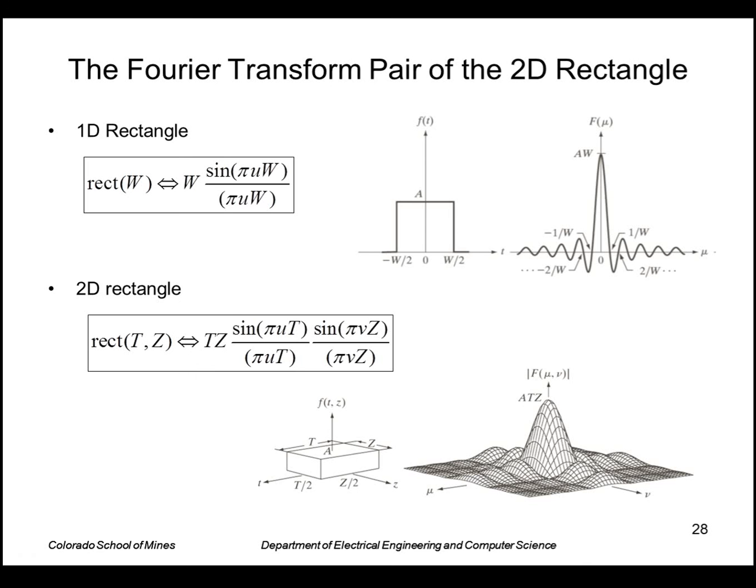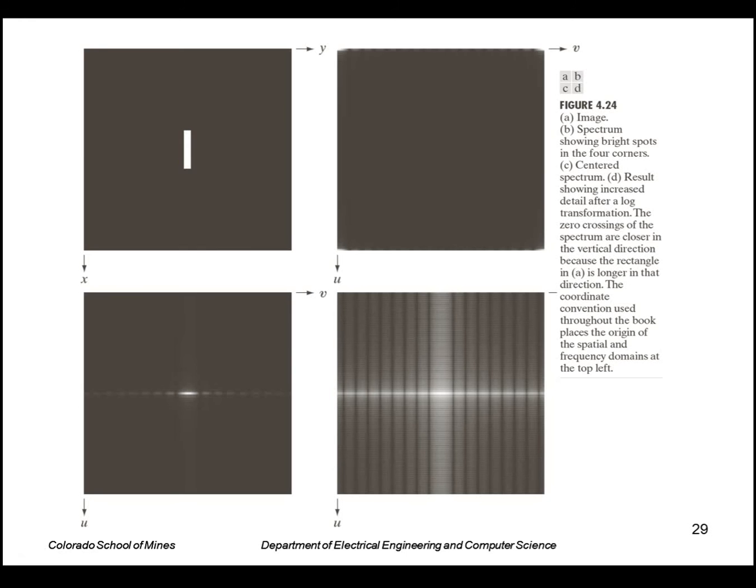Let's look at the Fourier transform of the rectangle function. Recall that the one-dimensional rectangle had a Fourier pair of a sinc function. The two-dimensional rectangle, which is a product of these two, has essentially a sinc function in two dimensions, where these lobes could be different depending on the size of the rectangle in both dimensions. Here's an example of an image with a rectangle, and this is its transform.